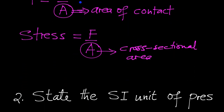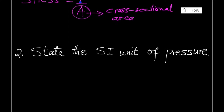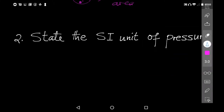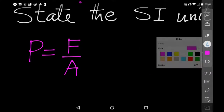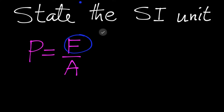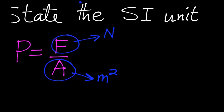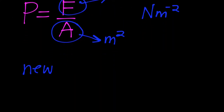Question number two: state the SI unit of pressure. From the formula, pressure equals force over area. The SI unit of force is newtons, and the area of contact is in square meters. When you divide, using index notation, the meters squared are in the denominator — giving us newtons per square meter.